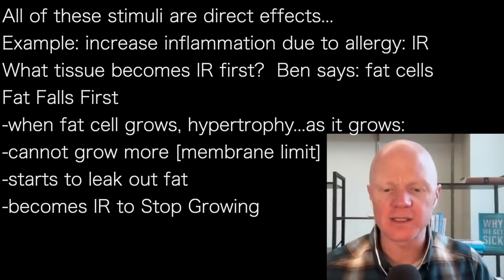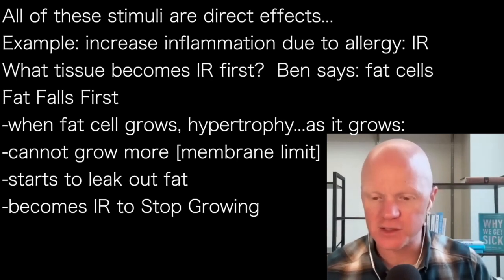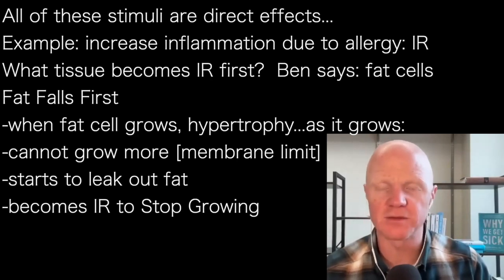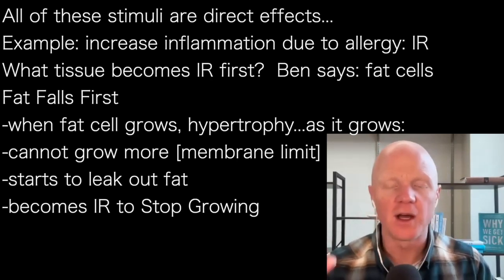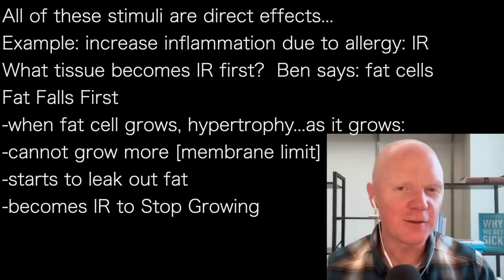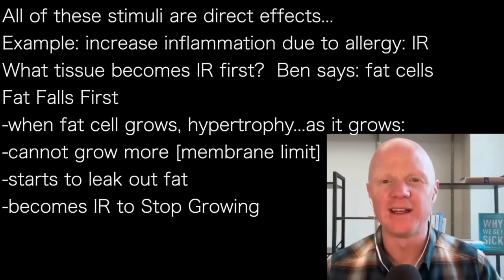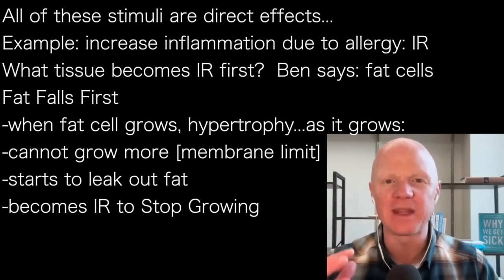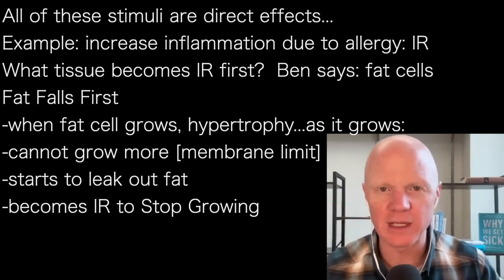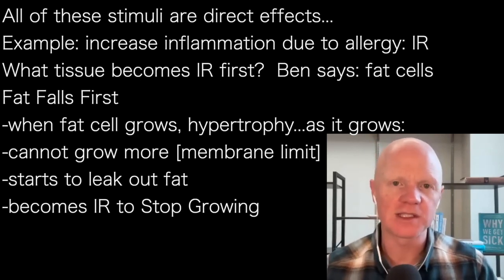There are multiple theories about which tissue of the body becomes insulin resistant first. Some say it's the muscle, some say it's the liver, others say it's the fat cells. Anyone who says it's other than the fat cells is totally wrong. I expect they'd say the same thing about me, but I'm right. Fat cells are the beginning — that is the first domino to fall. Probably by now you know of my affection for alliteration: fat falls first when it comes to insulin resistance.